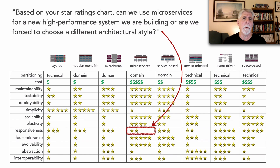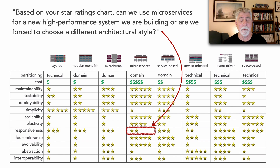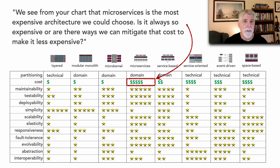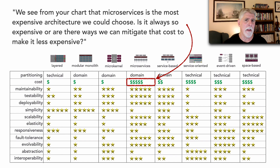The first question posed to me was: based on your star ratings chart, can we use microservices for a new high-performance system we are building, or based on your star rating of two stars, are we forced to choose a different architecture style? And another question posed to me last month: we see from your chart that microservices is the most expensive architecture we could choose — is it always so expensive, or are there ways we can mitigate that cost to make it fit within our budget?